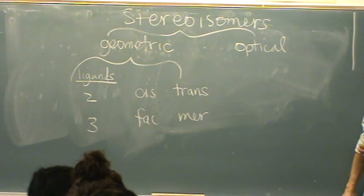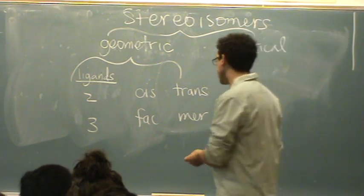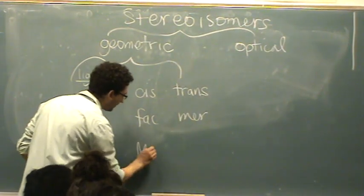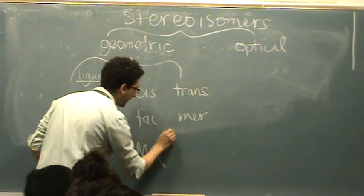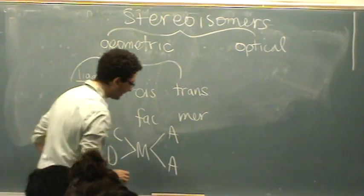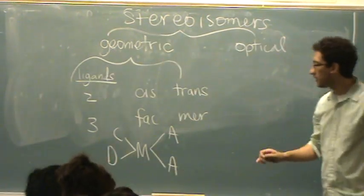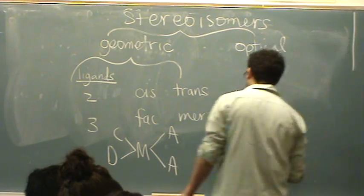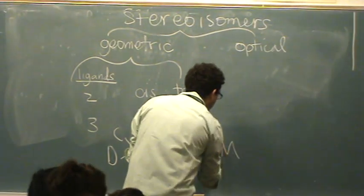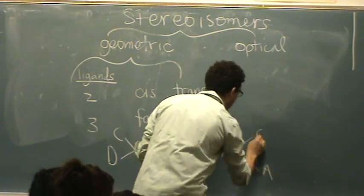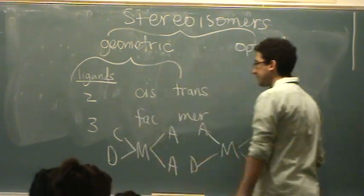Geometric isomers can have different physical properties, yet they look really similar. So an example would be a metal that has A, A, C and D like that. It's square planar and the A's are cis versus a metal that has A's opposite of each other. The second one is trans.